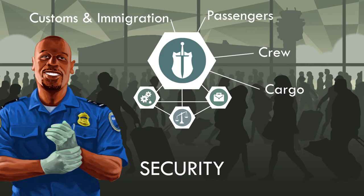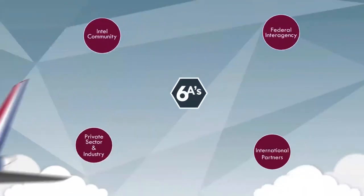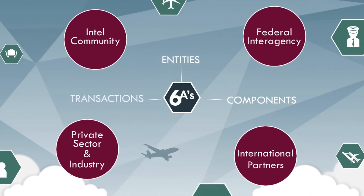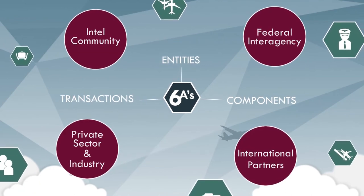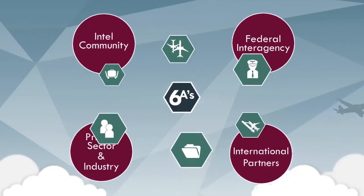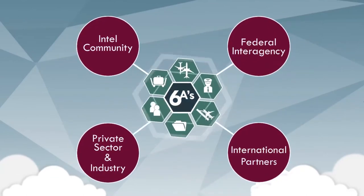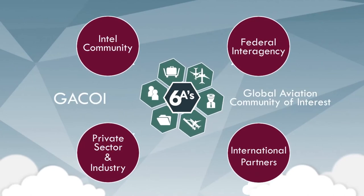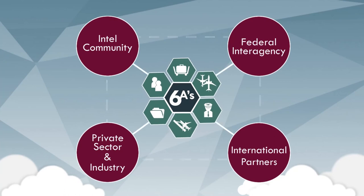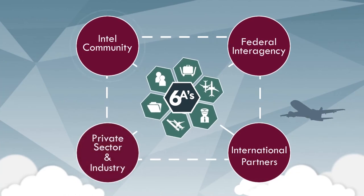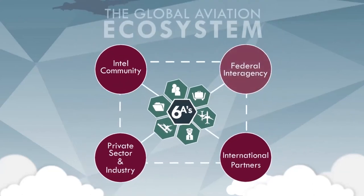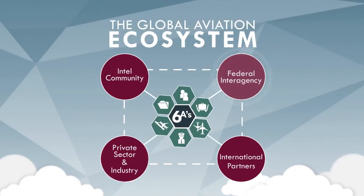The more you understand the activities, exchanges, and interconnectedness of the ecosystem, the better prepared you are to operate within it. In summary, the global aviation ecosystem is a term that refers to the components, entities, and transactions that exist within the aviation domain. The components are referred to as the six A's, and the four primary entities are known as the global aviation community of interest. Your understanding of the interconnected transactions within the aviation ecosystem, as well as the purpose for the transactions, is critical to ensuring the safety and security of the aviation domain.